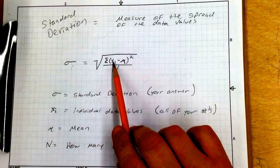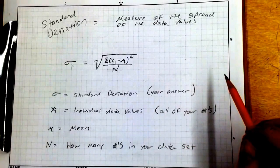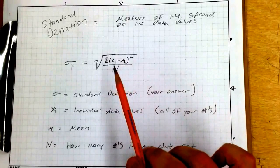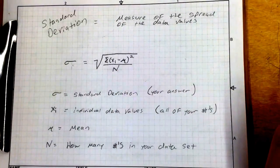X sub i, that is your individual data values, or your numbers that you need to put in there. μ is your mean, and n is how many numbers is in your data set.